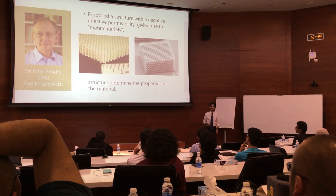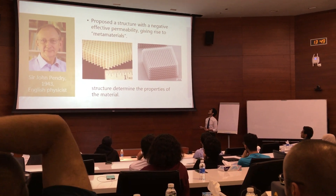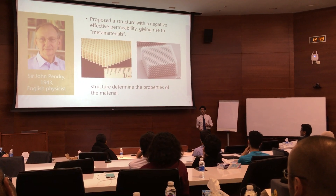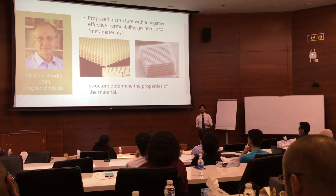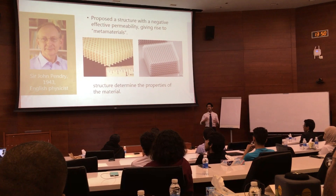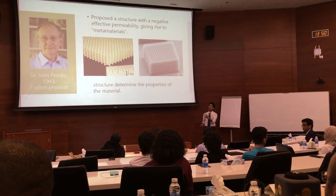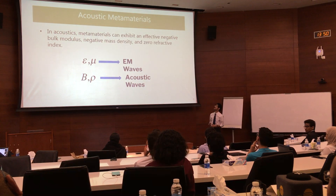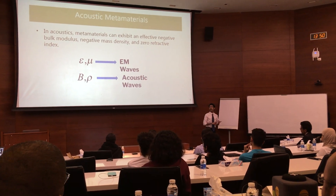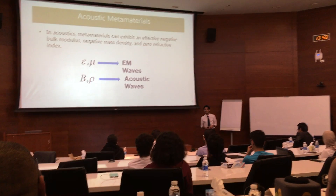His work remained largely unnoticed because such materials are non-existent in nature — that is until 1999, when Sir John Pendry realized a structure that could give the overall effect of having negative permeability. This eventually gave rise to something called metamaterials, which are materials that are artificially engineered, and that gain their properties not from the chemical properties of the molecules, but rather the structure. This allows us to design the structure in whatever way we want to achieve the functionality we want. Similar to optical metamaterials, there are acoustic metamaterials, and the unusual parameters they can have are bulk modulus and mass density. It has already been shown that some metamaterials can act as if they have negative mass density, for example.